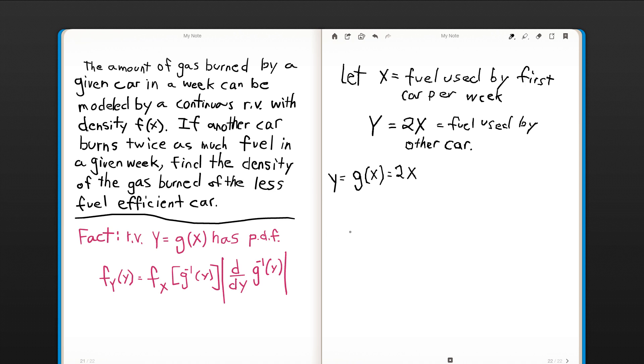And so what we need to find then, we have f(x). That's given to us in a general form. We need to find g inverse of y. So this implies that x, which is equal to our g inverse y, it's an inverse function here, is equal to y over 2.